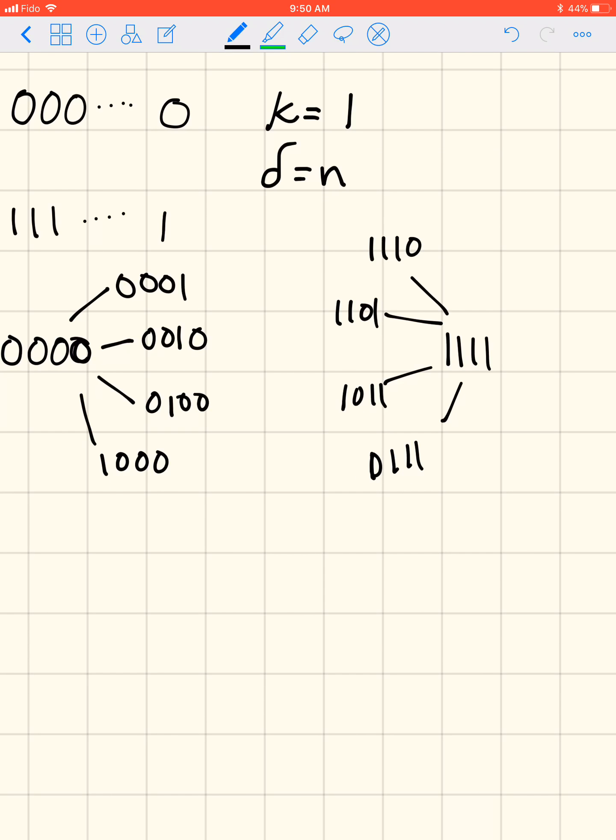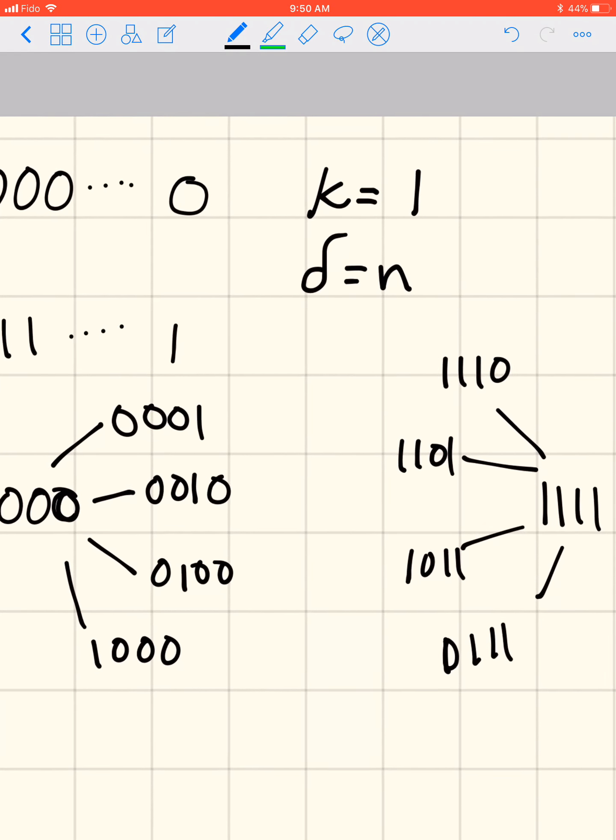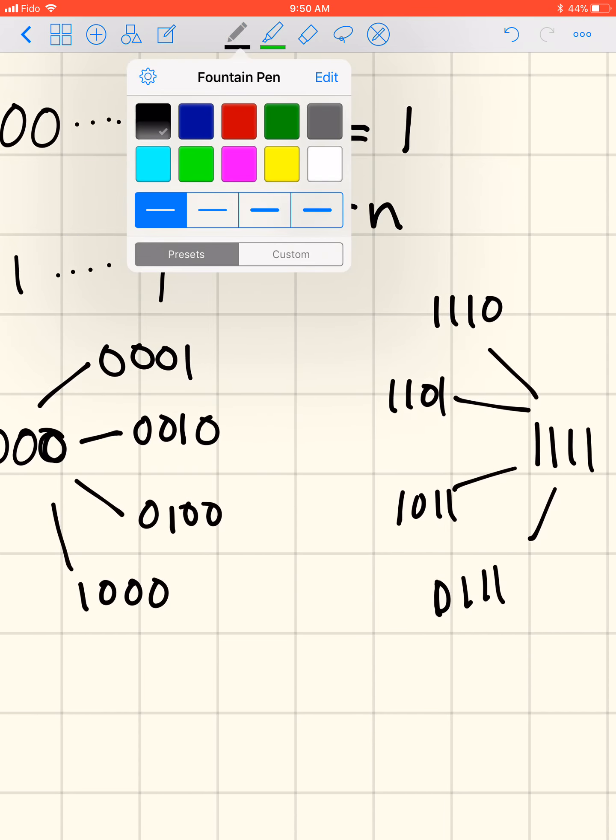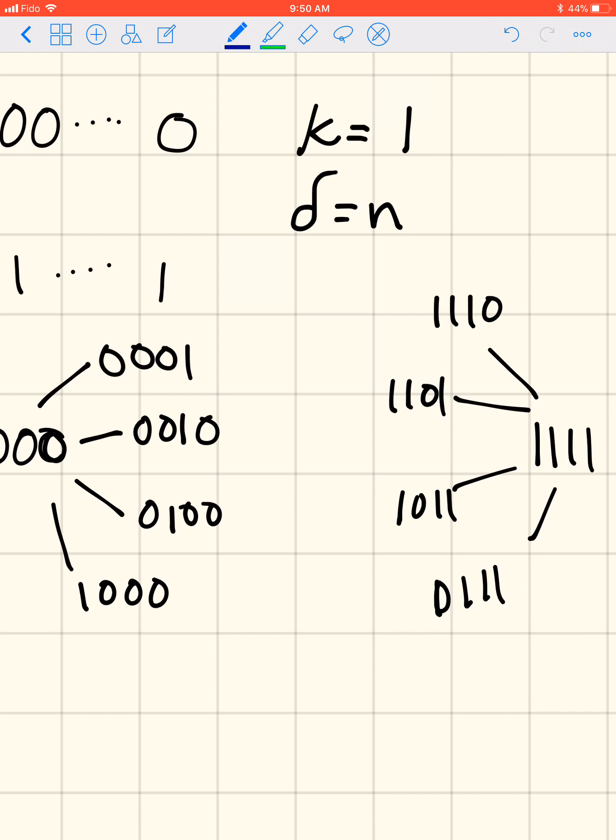But if we get any of these words in the middle, let's change color just to keep them separate. If we get 0011, or 0101, or 1010, there are 4 choose 2, there are 6 of these. We don't know, we can tell that there's a mistake, it's not a code word, but we don't know whether we should correct it over here or over here.